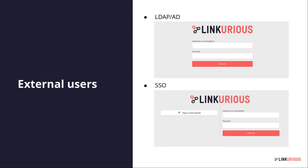You can see how the Linkurious Enterprise login page changes depending on the external authentication system. With LDAP and Active Directory, nothing visually changes — when you type the username and password, Linkurious Enterprise searches for that user in the external system. With SSO, there's an extra button to redirect the user to the external authentication system login page. If the user is already authenticated in the browser, they can access Linkurious Enterprise without typing credentials again.